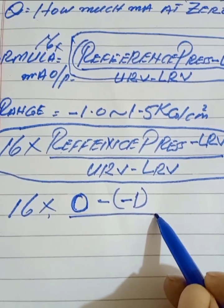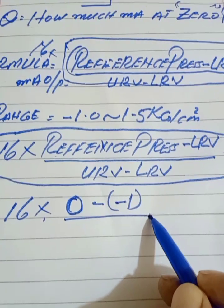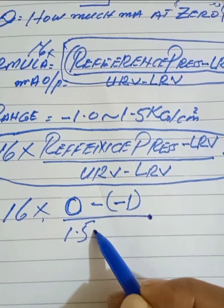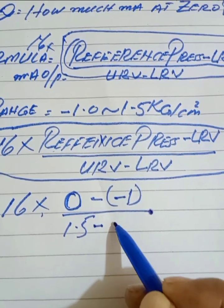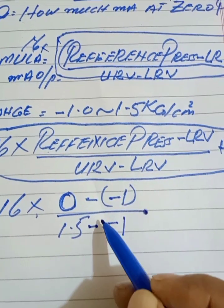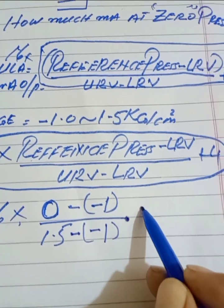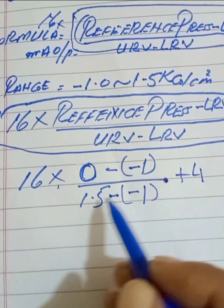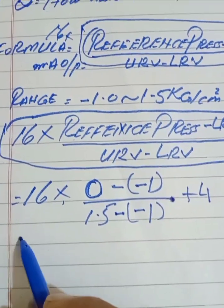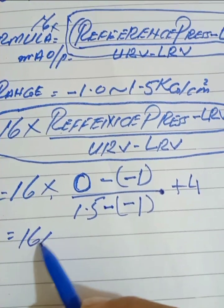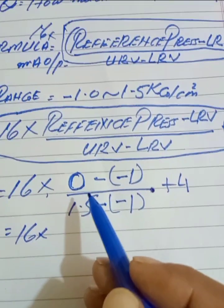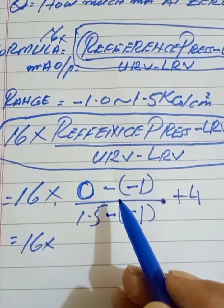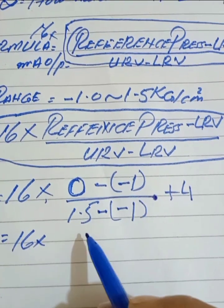Our URV is 1.5. So the calculation becomes: 16 into (zero minus minus 1.0), divided by (1.5 minus minus 1.0), plus 4. Zero minus negative one equals positive one. So the numerator is 1, and the denominator is 1.5 plus 1.0, which equals 2.5.